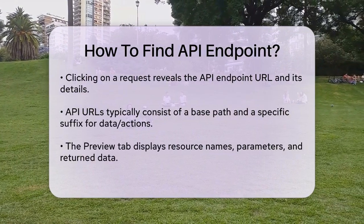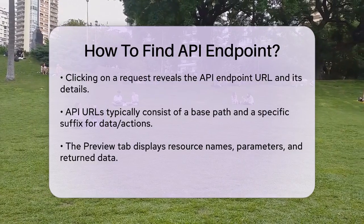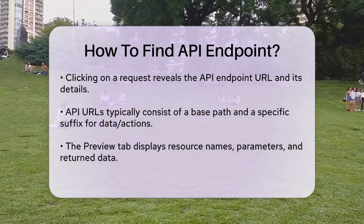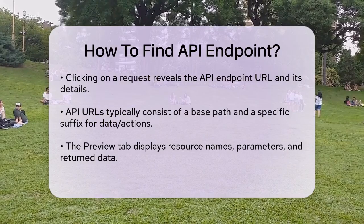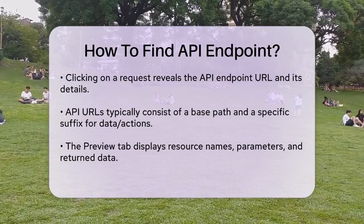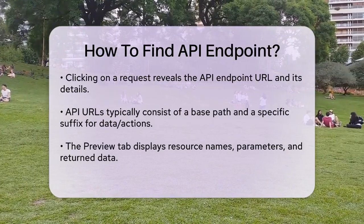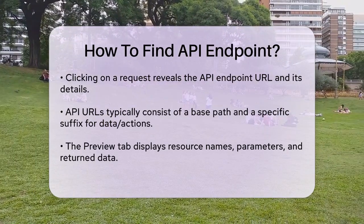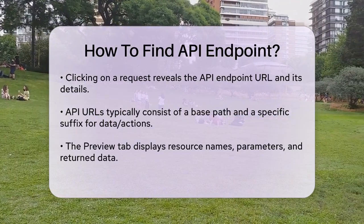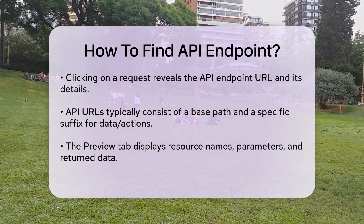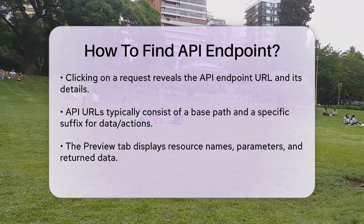When you find an interesting request, click on it and go to the Preview tab. Here you'll see the resource name, parameters, arguments supplied to the API, and the result sets, which include headers and the actual data returned by the API. If this matches what you're looking for, you've successfully identified an API endpoint.